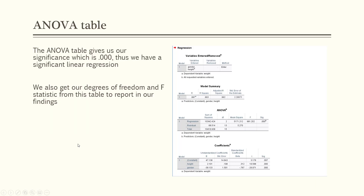Just as with linear regression, we're also interested in the ANOVA table. The ANOVA table gives us our significance — here we show a p-value of 0.000, so we have a significant regression model because it's below 0.05. The ANOVA table gives us our degrees of freedom, which is two, and our F value of 981.202, which we have to report in our findings just as we did before in linear regression.